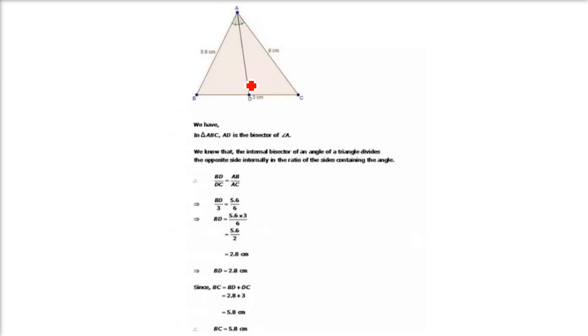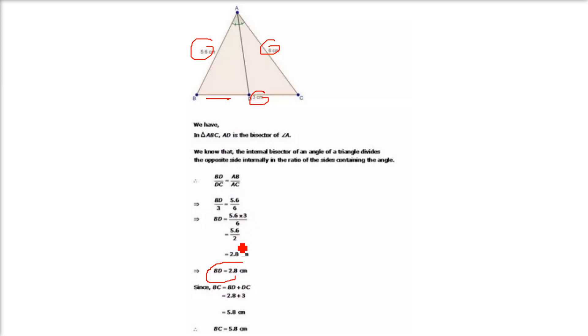Similarly, 5.6 by 6 equals BD by 3, so BD equals 5.6 × 3 ÷ 6 equals 2.8. But we have to find whole BC, so BC equals 3 plus 2.8, which is 5.8.